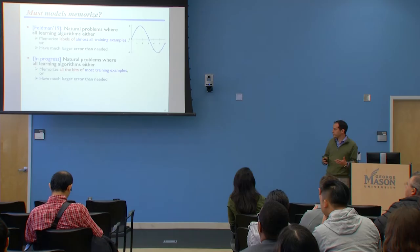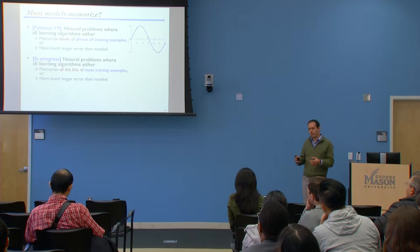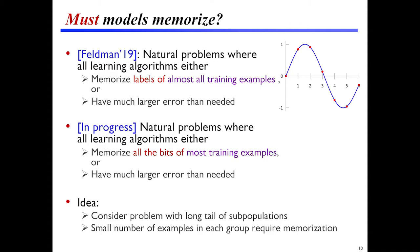Vitaly Feldman has a paper out this year giving natural problems where any learning algorithm that is sufficiently accurate has to memorize the labels of basically all of its training data. That is, in order to match the accuracy of the best possible algorithm using the same sample size, it has to explicitly remember the labels of almost all the training examples. Work in progress with Vitaly Feldman and a student, Gavin Brown, looks at natural problems where every learning algorithm has to memorize all the bits of relatively complex examples — so from the algorithm, if it's accurate, you can extract a lot of the inputs just by using black-box access to the model.